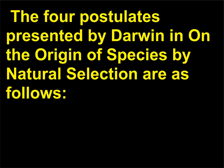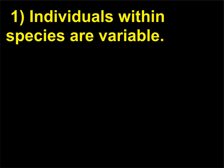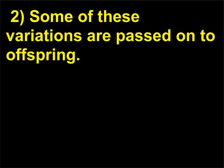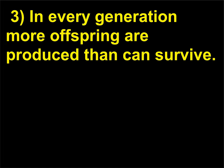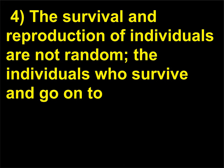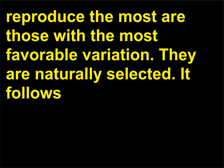The four postulates presented by Darwin in On the Origin of Species by Natural Selection are: one, individuals within species are variable; two, some of these variations are passed on to offspring; three, in every generation more offspring are produced than can survive; and four, the survival and reproduction of individuals are not random — the individuals who survive and go on to reproduce the most are those with the most favorable variation. They are naturally selected.